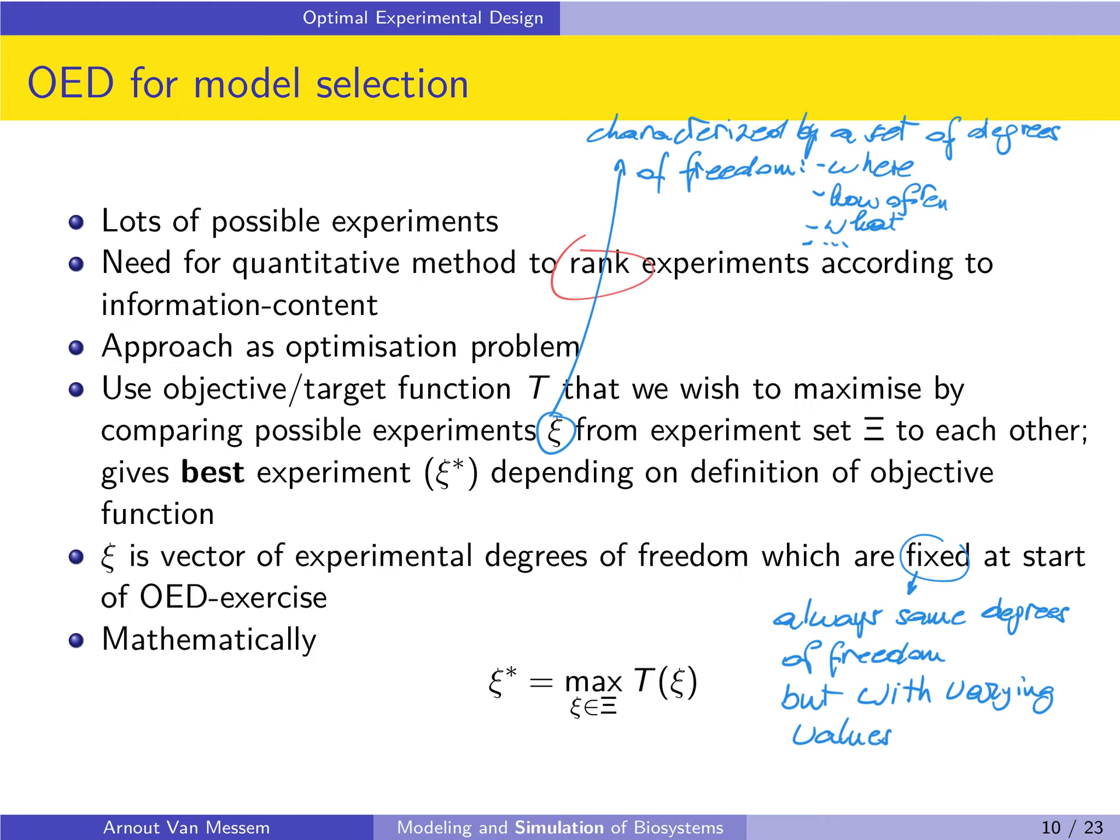By solving this optimization problem we will obtain a set of inputs for the experiment, which could be the variables that we have to measure, the initial conditions for the experiment, the sampling time, the sampling duration, and so on.